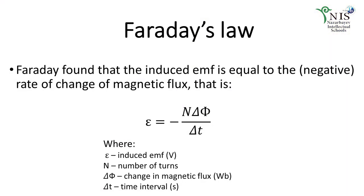Faraday found that the induced EMF is equal to the negative rate of change of magnetic flux. Often, the flux passes through a coil containing more than one loop. If the coil consists of N loops, the total induced EMF is N times greater than for each individual loop. The total induced EMF is described by Faraday's formula, where we have the induced electromotive force, the number of turns N, the change in magnetic flux, and the time taken. The minus sign relates to the polarity of the induced EMF, which will be discussed next.